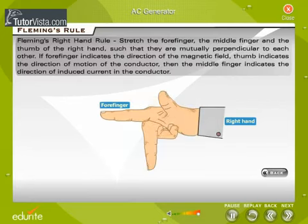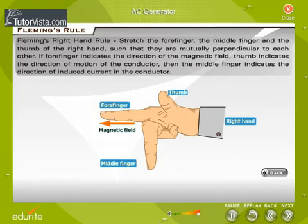Fleming's right-hand rule: Stretch the forefinger, the middle finger, and the thumb of the right hand such that they are mutually perpendicular to each other. If forefinger indicates the direction of the magnetic field, thumb indicates the direction of motion of the conductor, then the middle finger indicates the direction of the induced current in the conductor.